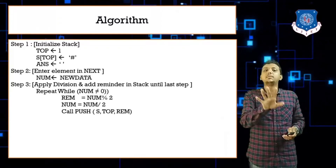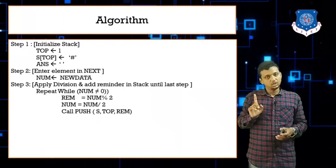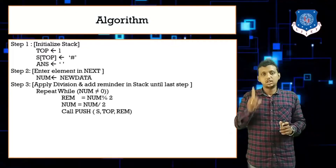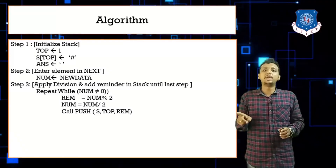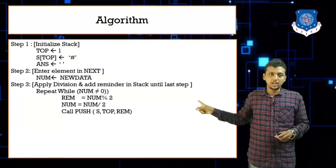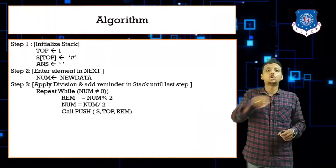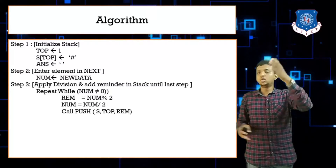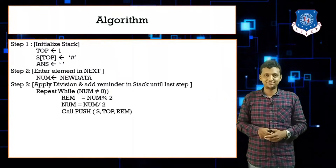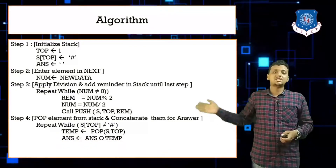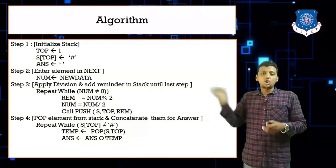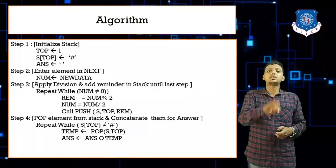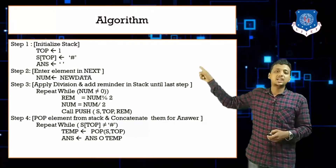Since 3 ÷ 2 = 1.5 but we use integer division, number becomes 1. Then 1 mod 2 = 1, push 1; 1 ÷ 2 = 0.5, which as an integer becomes 0. Now number equals zero, so the condition 'number ≠ 0' is false and the loop stops. The stack now holds all the remainders to be popped.